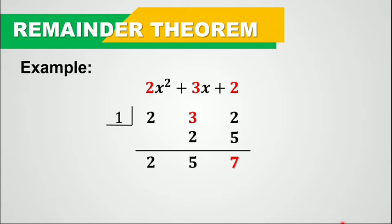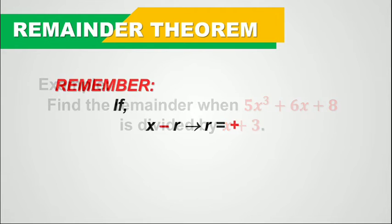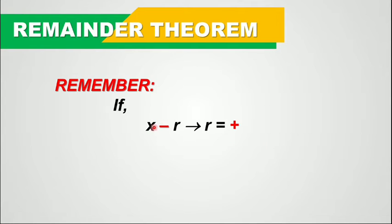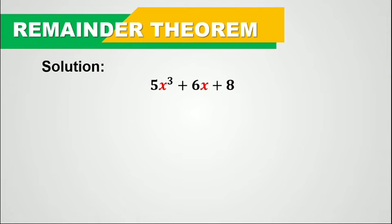So let's try another example. Find the remainder when 5x cubed plus 6x plus 8 is divided by x plus 3. Remember that if the divisor is x minus r, so if it is minus or negative, the value of r would be positive. And if it is plus or positive, then the value of r would be negative. So here this is plus, therefore our r is negative 3.